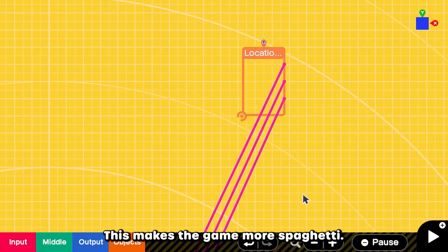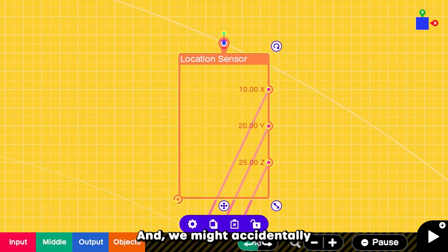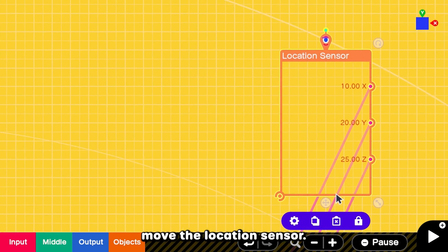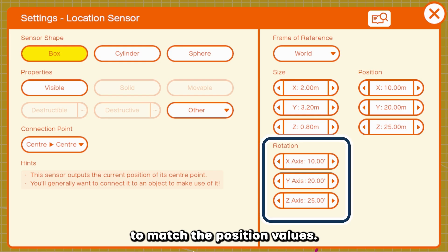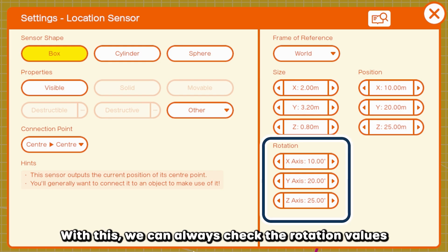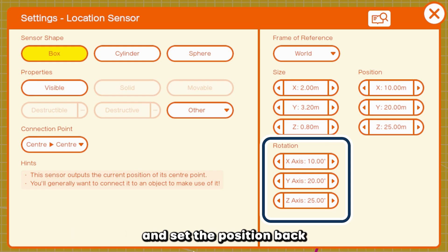This makes the game more spaghetti. And we might accidentally move the location sensor, so we should lock it. Additionally, we can change the rotation values to match the position values. With this, we can always check the rotation values and set the position back to match its original values again.